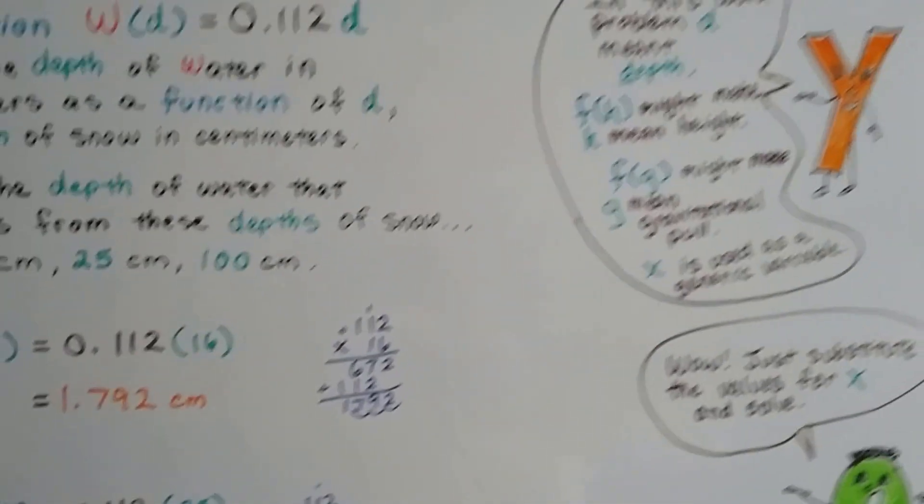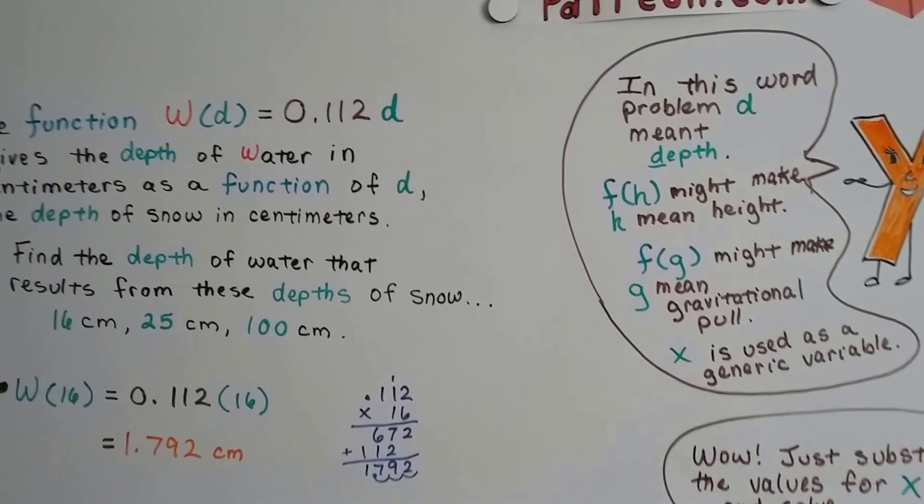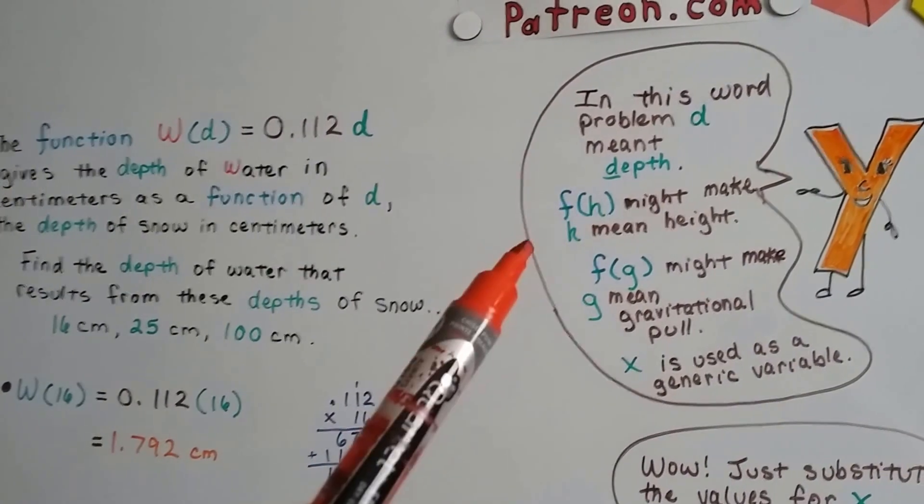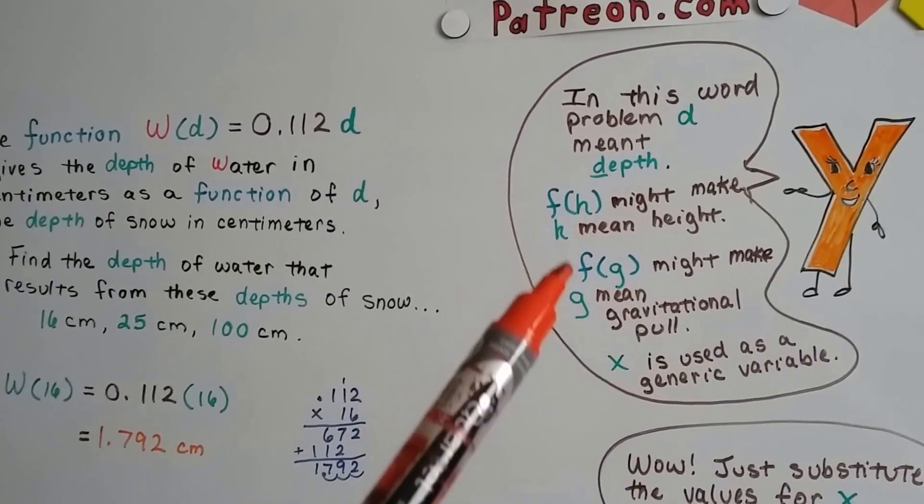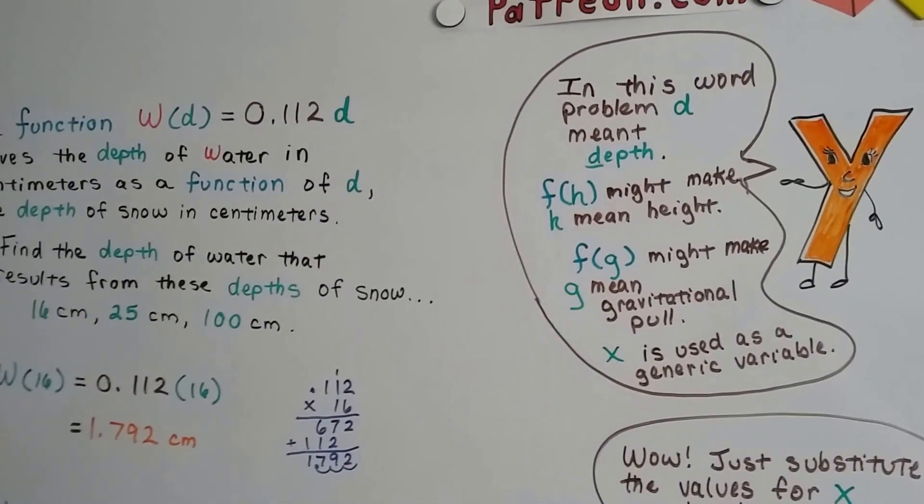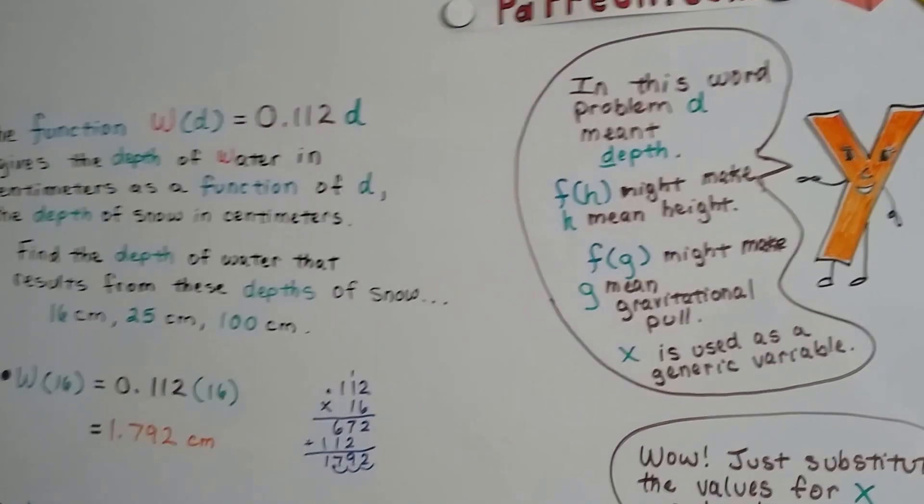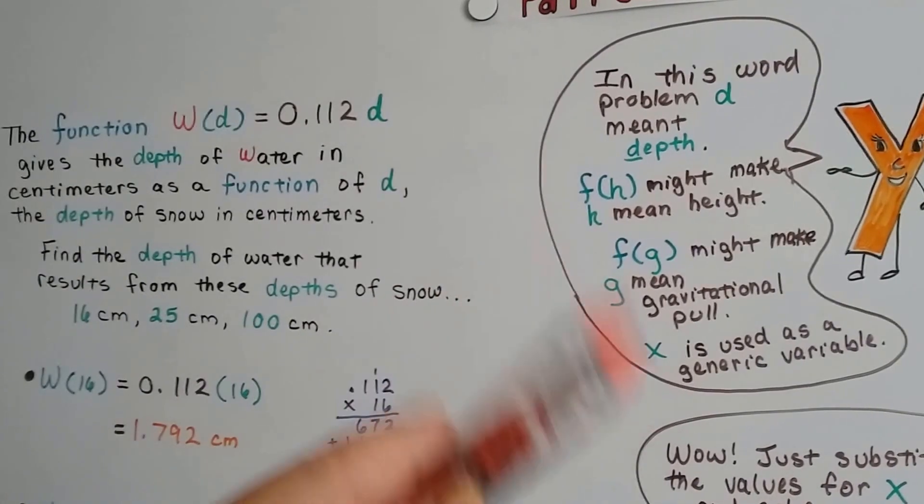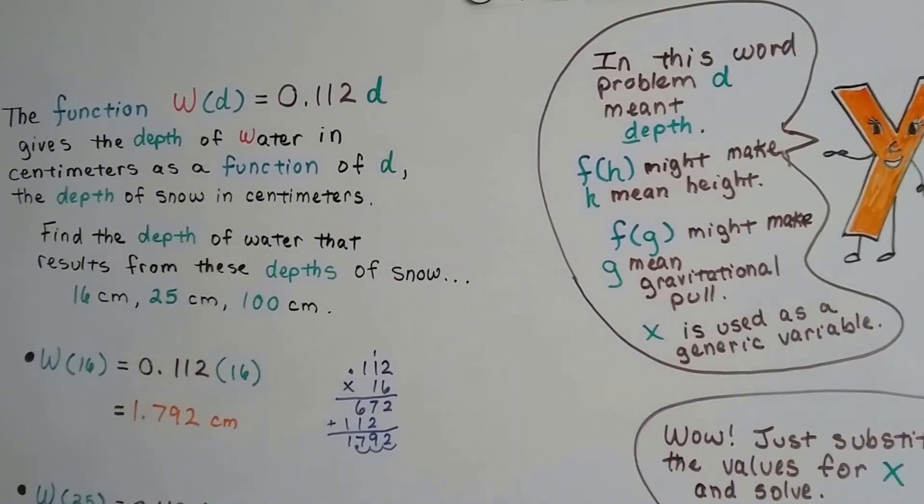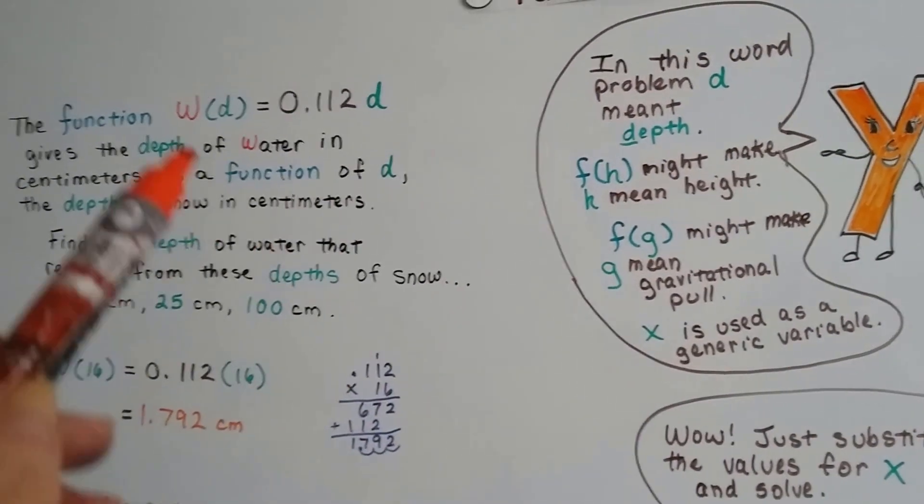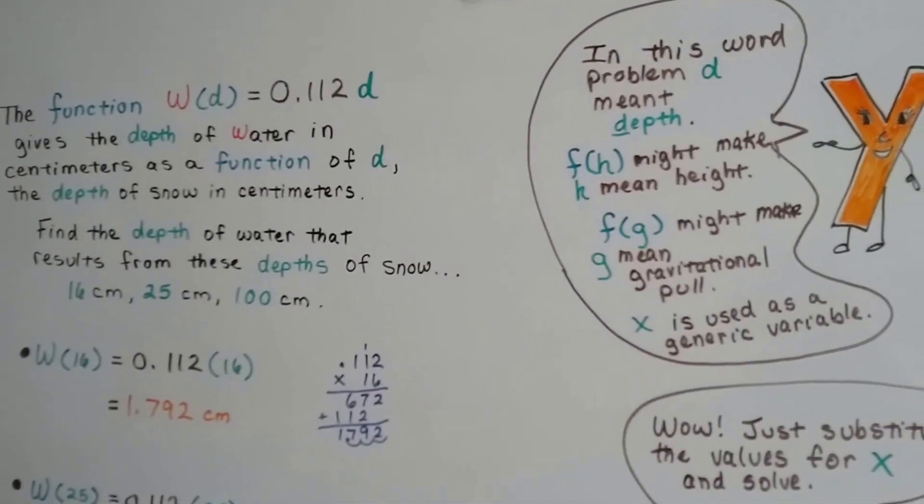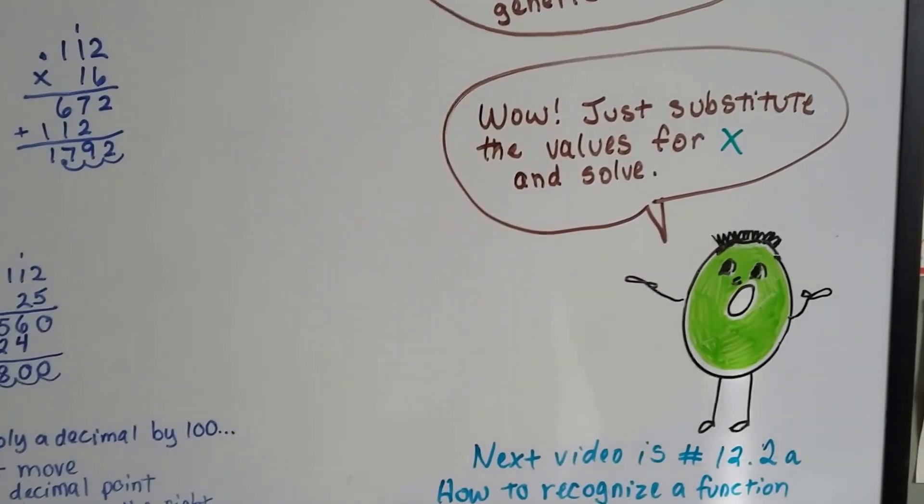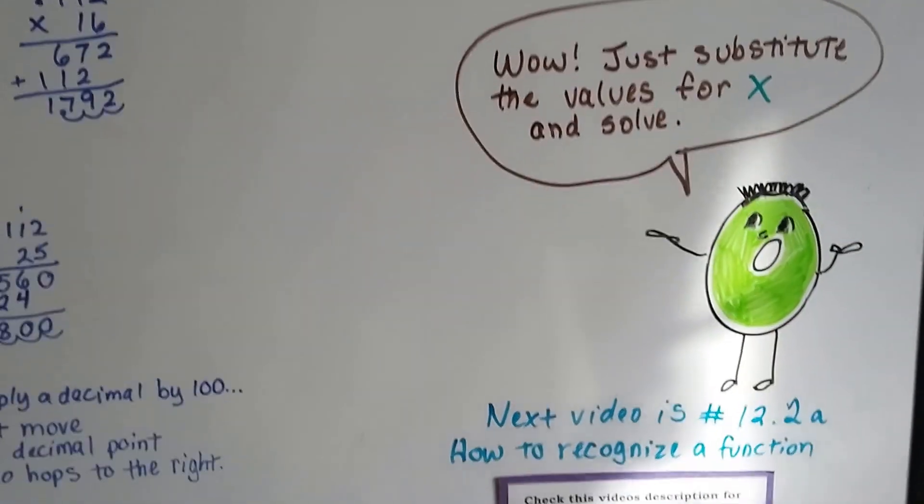In this word problem, d meant depth, w was water. You might see f(h), that might mean height. You might see g, that might mean gravitational pull. x is used as a generic variable. Don't let the letters of the alphabet scare you, worry you, confuse you. Just do it as if it said f(x). Just substitute the values for that variable or x and solve it.